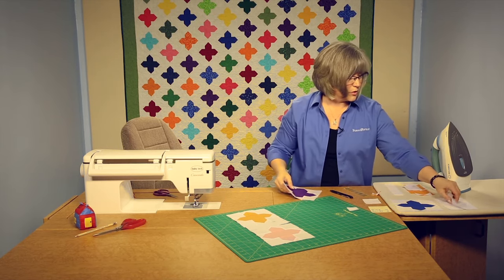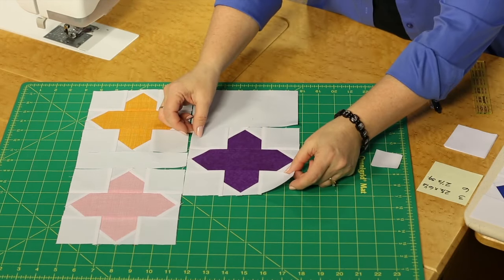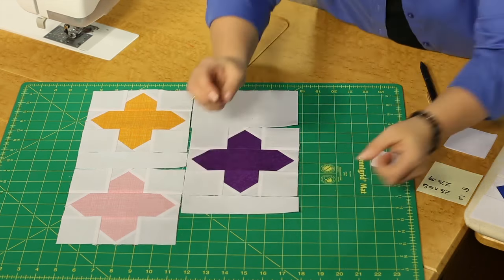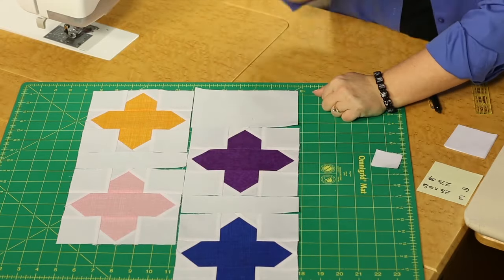So we're going to be then cutting rectangles like this, and joining a block here. Then your second row also has those spacers between. So then you've got row one, row two.